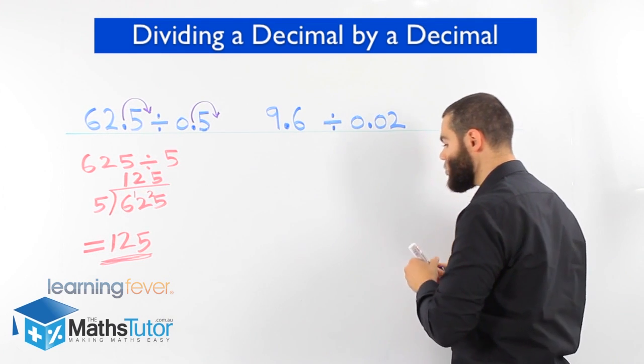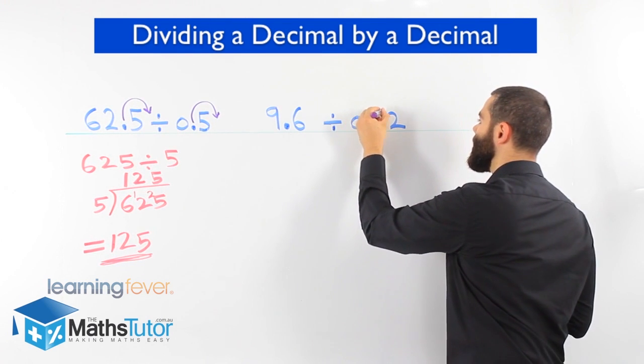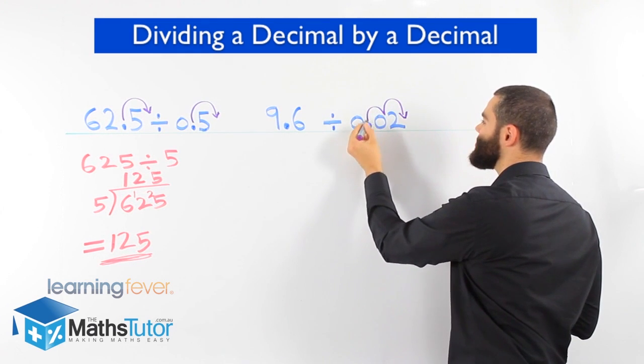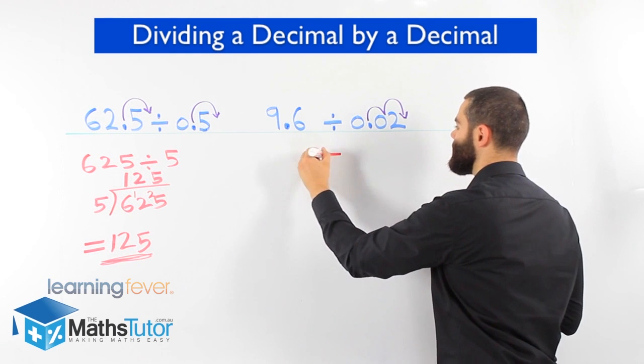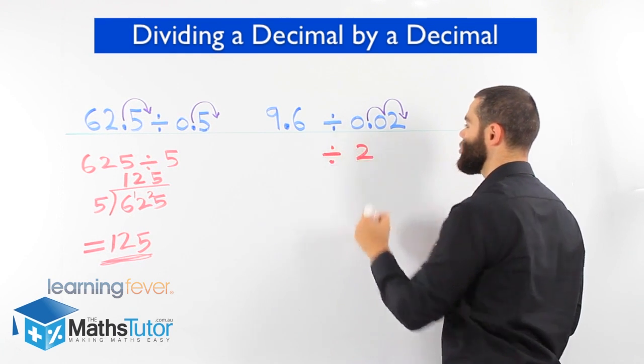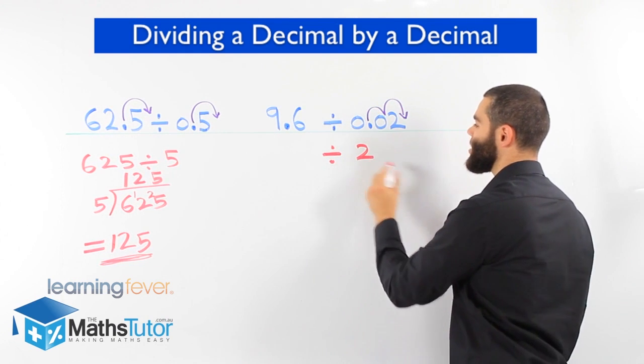To make it a whole number, we have to move and make it a whole number. And we have to jump twice this time. The point has to move twice. So now it becomes a 2. We move it, it becomes a 2. Now it's a whole number.